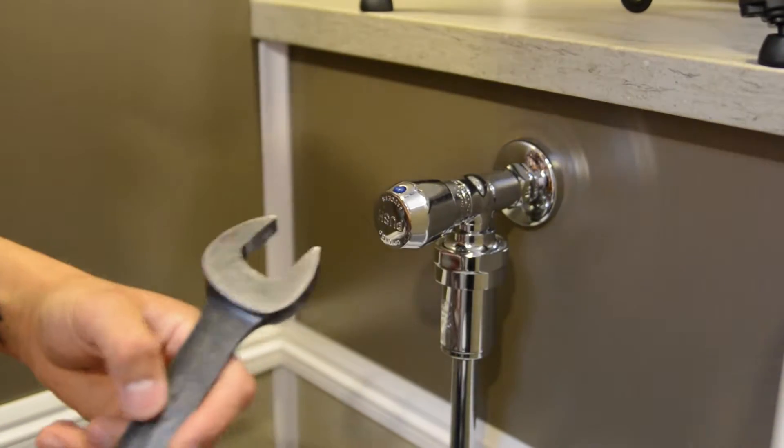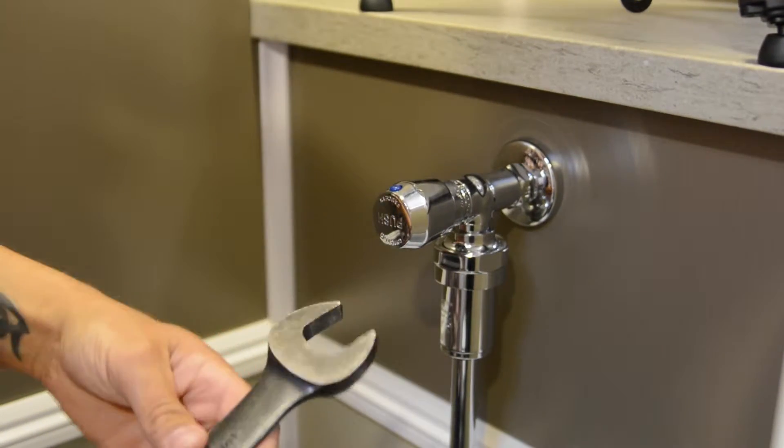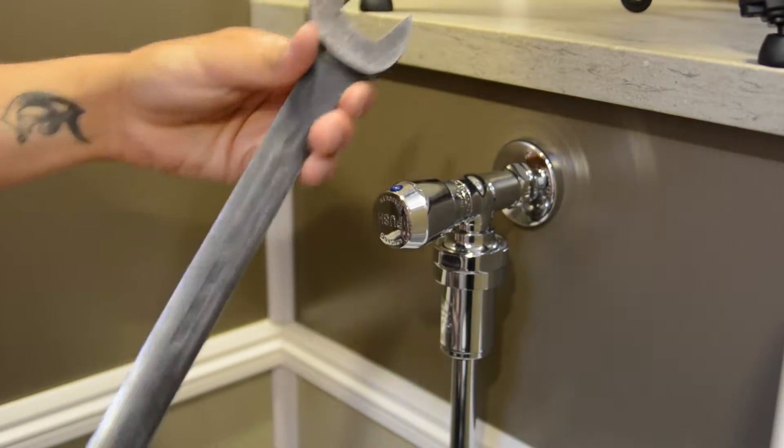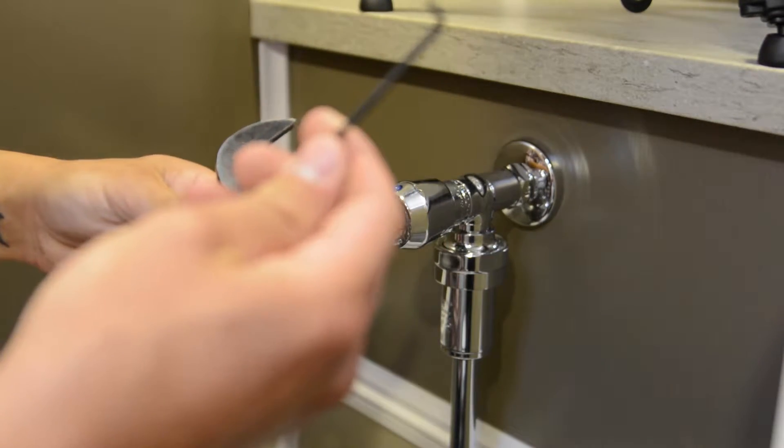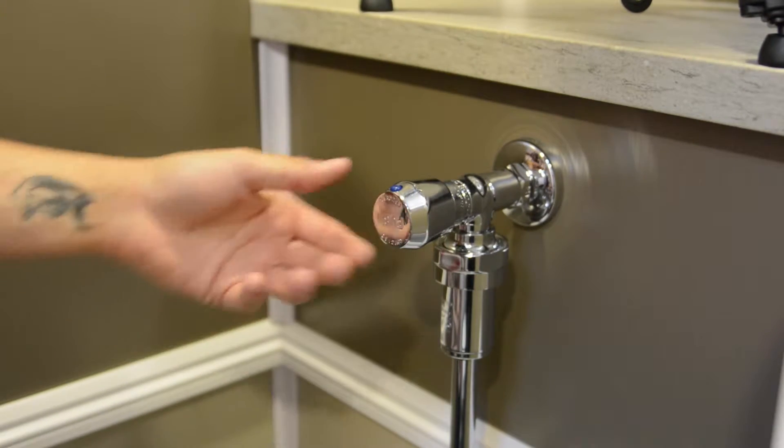Alright, so we're going to adjust the flush pressure of the urinal here. To do that, we need a 1-1/8 inch wrench and a 3/32 inch allen wrench. If you can't get this little